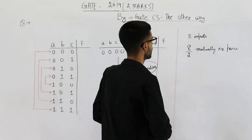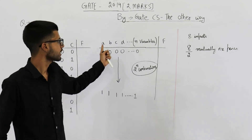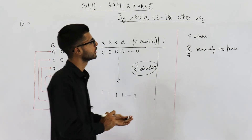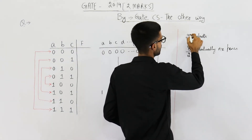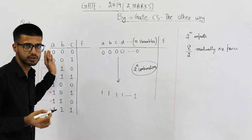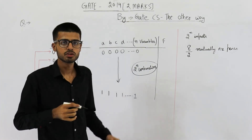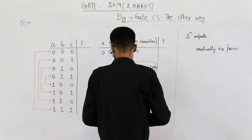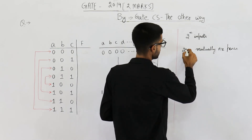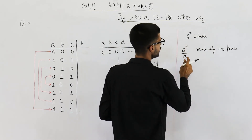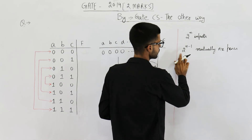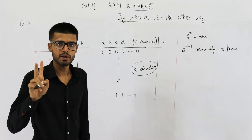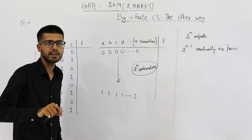Now let us generalize. In the general case with n variables, the number of inputs will be 2 raised to the power n. The number of mutually exclusive pairs formed will be 2^n divided by 2, which comes out to be 2 raised to the power n minus 1. For each pair, there are two methods to write a 1.